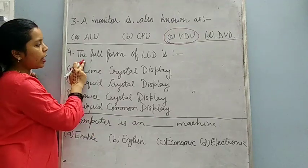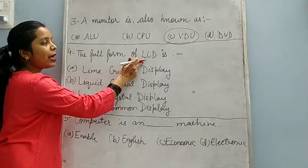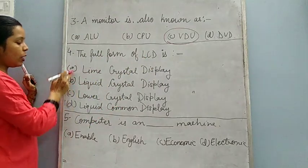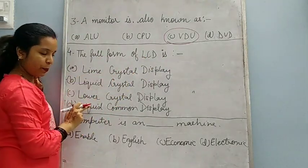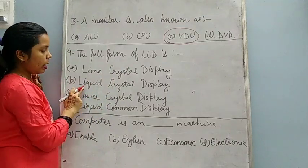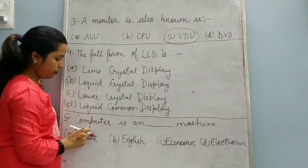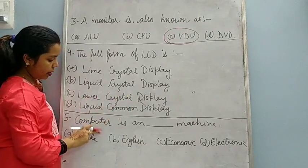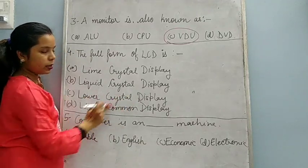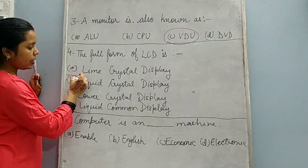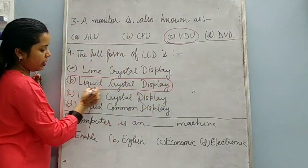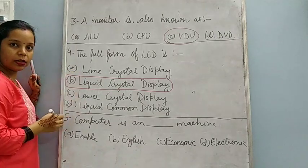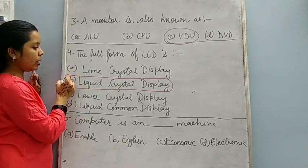Now fourth question is, the full form of LCD is? Now you have to see the correct one. Lime Crystal Display - it's wrong. Liquid Crystal Display, Lower Crystal Display, Liquid Common Display. Your answer is B, Liquid Crystal Display. This is the correct answer. Learn it.